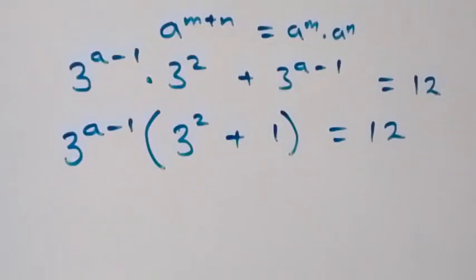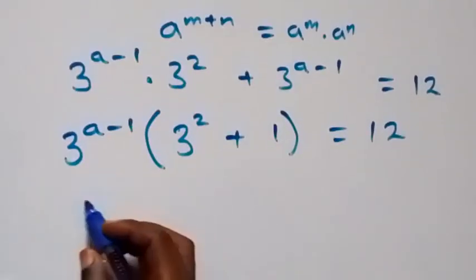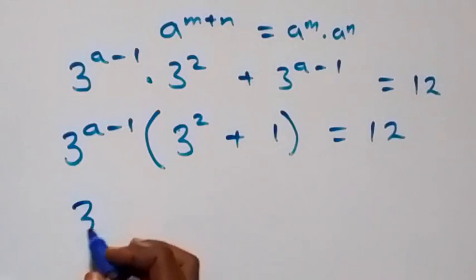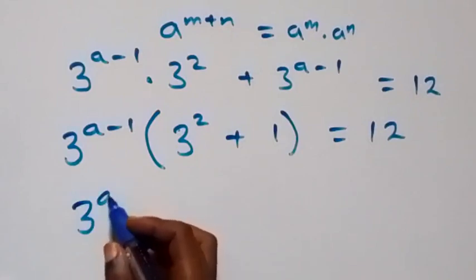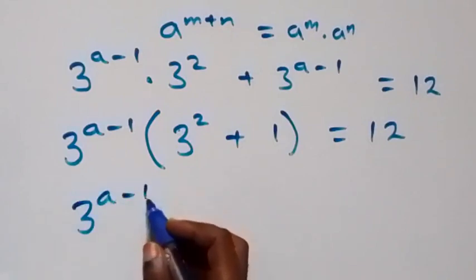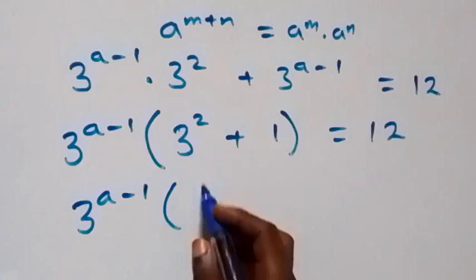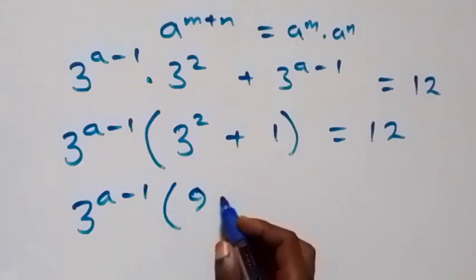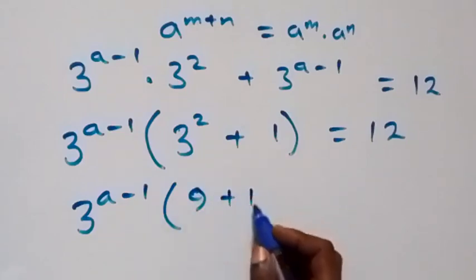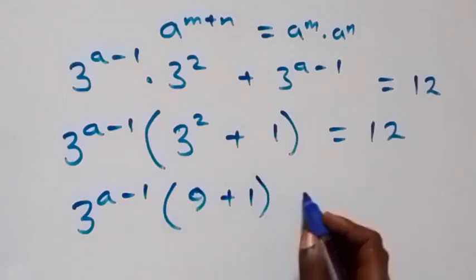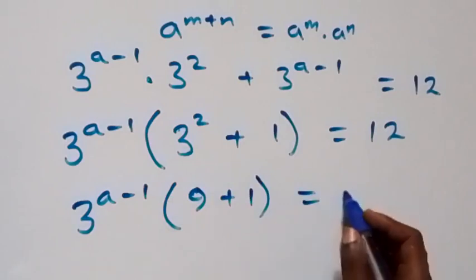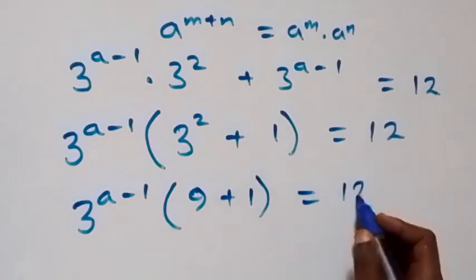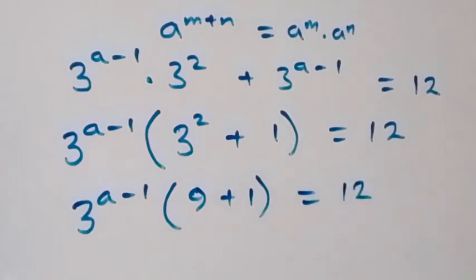Then, next step from here, this becomes 3 raised to power a minus 1, into bracket, 3 squared — 3 times 3 — that's 9, plus 1, equals 12 on this side.